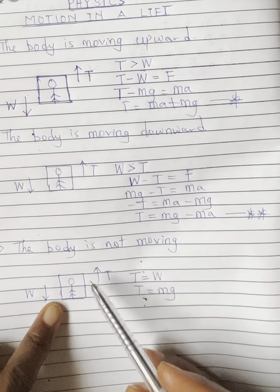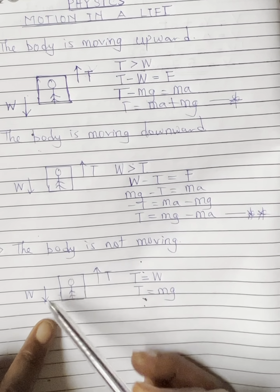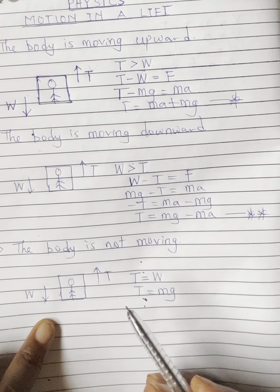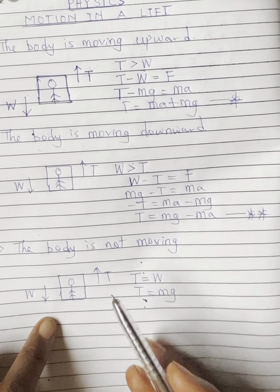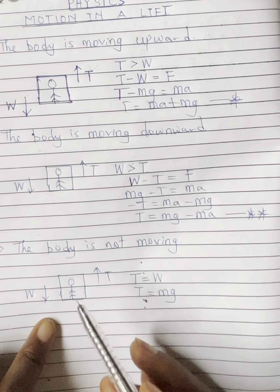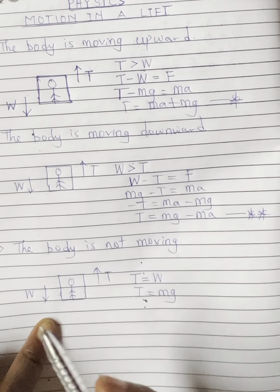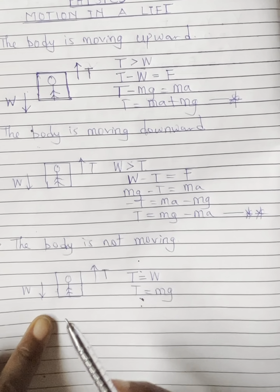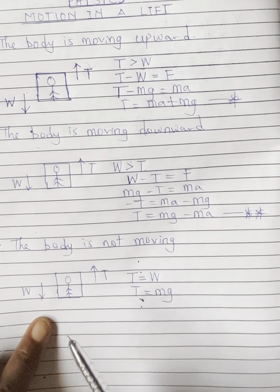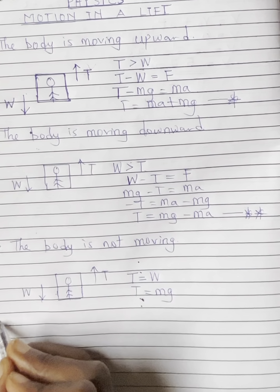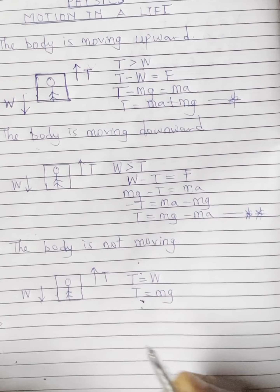The condition for this is that the lift must be moving with a constant velocity. When a body moves with constant velocity, it is not accelerating — the acceleration is equal to zero.